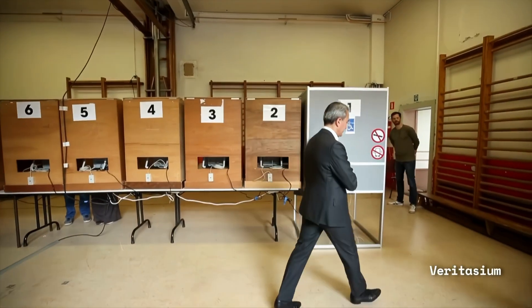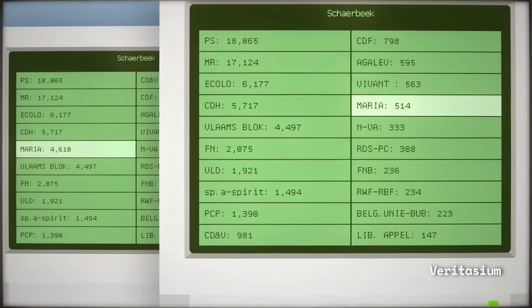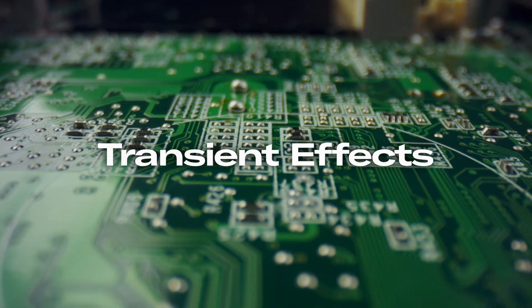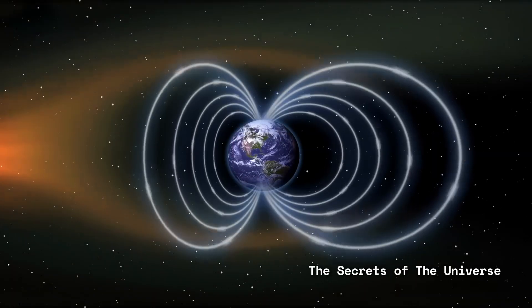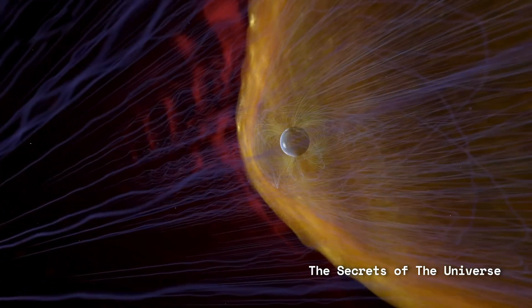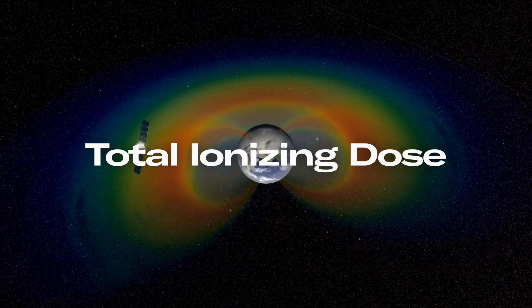Like in 2003, when a bit flips in a voting machine in Belgium, causing one candidate to suddenly gain 4096 votes. Transient effects are temporary malfunctions in electronic circuits due to a burst of radiation. This will look like spikes in voltage or in current. Outside of single event effects, there's an effect of inhabiting a high radiation environment for a long period of time that results in the accumulation of radiation. This is referred to as the total ionizing dose.